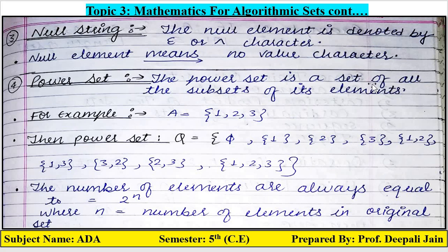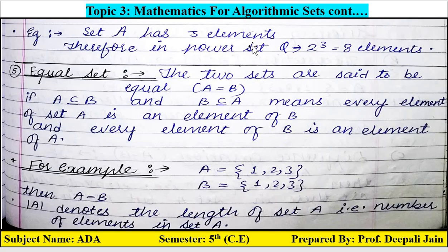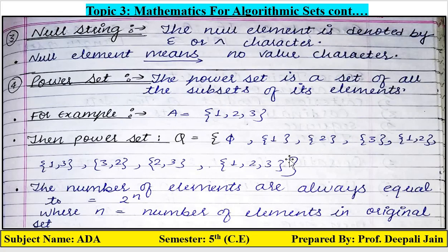Fourth definition is the power set. The power set is a set of all the subsets of its elements. For example, if A = {1, 2, 3}, the formula for the number of power sets is 2 raised to the power n, where n is the number of elements in the original set. Here A has 3 elements, so 2³ = 8. So total 8 power sets will be formed — individual elements {1}, {2}, {3}; pairs {1,2}, {1,3}, {2,3}; and the full combination {1,2,3}; plus the empty set.